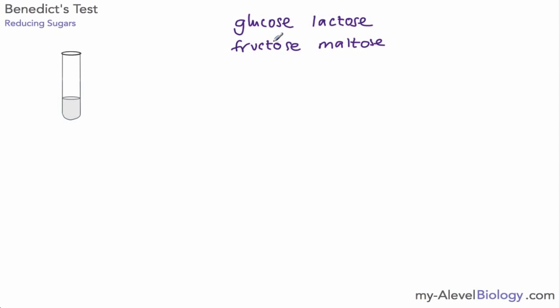Now without going into too much detail about what that actually means, what we have is some sugars that can actually donate electrons, and that's what we mean by them being able to reduce other chemicals. One of the chemicals they can reduce is something called Benedict's solution.